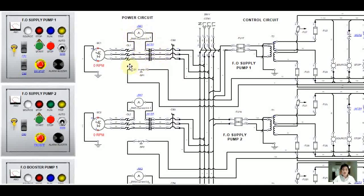I put an ammeter here so that I can connect it to the ammeter on the panel board. Without this it can still work, but for the purpose of simulation I have to connect this ammeter so that I can connect it to the panel board. How to create the panel board is another tutorial — you can find that on YouTube as well.